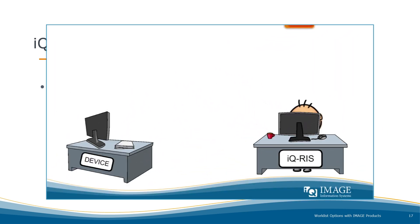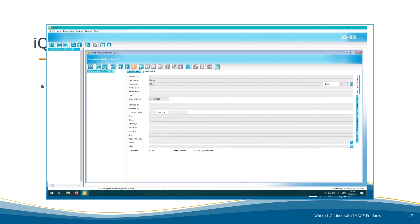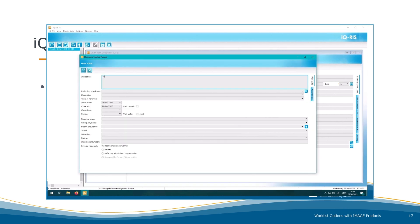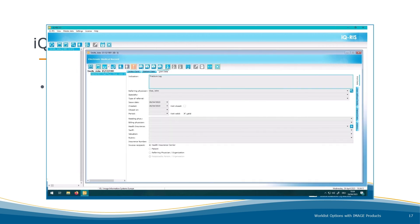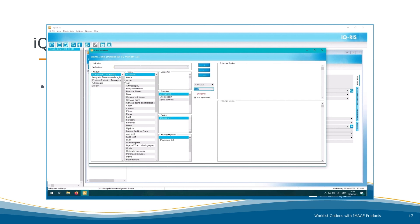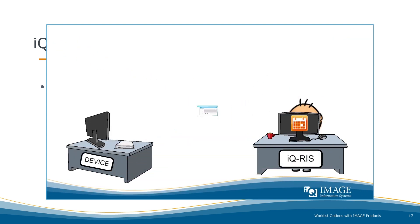Bob's practice has IQ-RIS and the practice has nothing to worry about. Bob can enter patient data directly into IQ-RIS and schedule the exam, entering relevant information such as the reading physician. He then prepares the examination by selecting the modality, body part, and localization. Automatically, the study data is transferred to the worklist. IQ-RIS takes over the planning and creation of the order as well as the transfer of this data to the device.